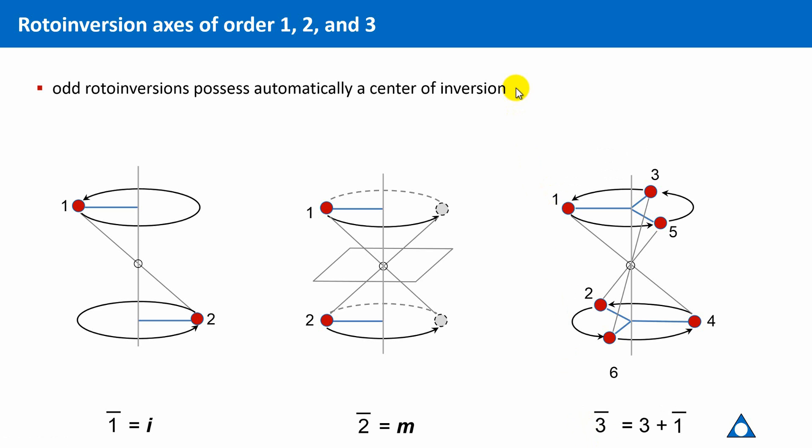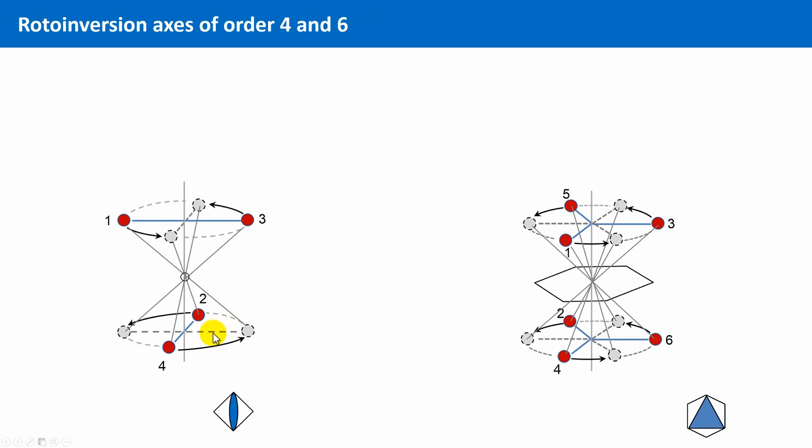Two further rotoinversions are left, namely rotoinversion axes of the order 4 and 6, which are shown on this slide. This 4-fold rotoinversion was already exemplarily explained with the help of this tetrahedron.